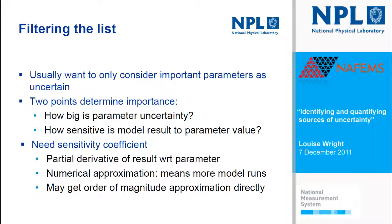Once you've got the list, it's typically very long and you don't want to deal with all the uncertainties listed. Usually you only want to consider the important parameters as uncertain. There are two points that determine importance: how big is the parameter uncertainty — which you've already characterised — and how sensitive is the model result to the parameter value. This requires a sensitivity coefficient, defined as the partial derivative of the result with respect to the parameter. These are difficult to get exactly, but you can generally get an order-of-magnitude approximation directly from the equations to determine whether a parameter is significant and help filter the list.